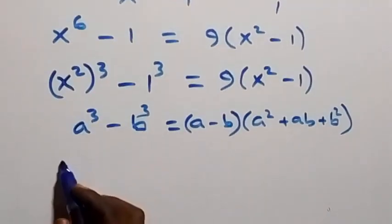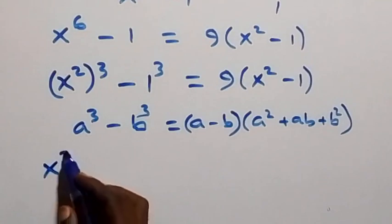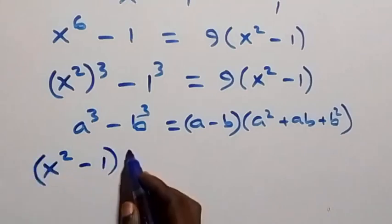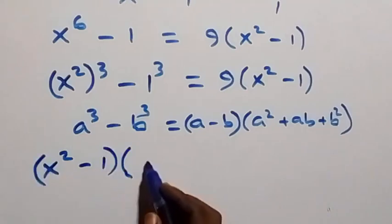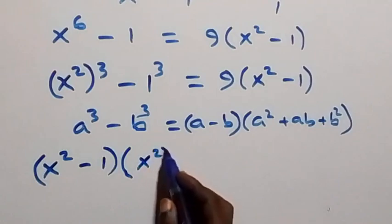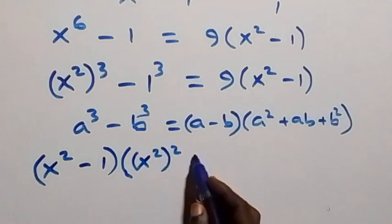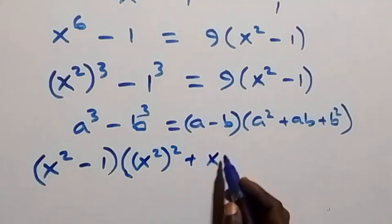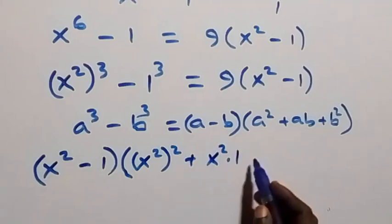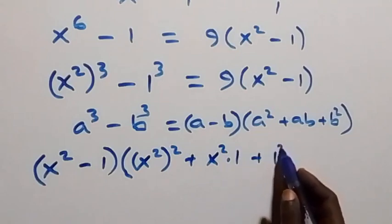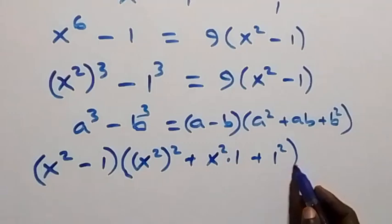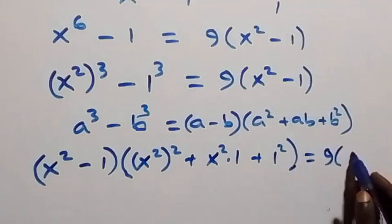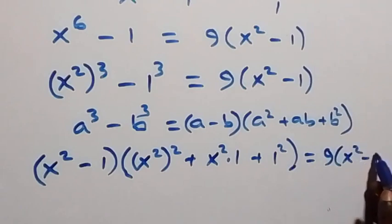Now we can write it in the form of this, and we have (x² minus 1) times bracket (x²)² plus x² times 1 plus 1² equals to 9 multiplied by (x² minus 1).